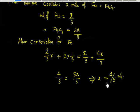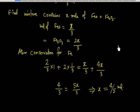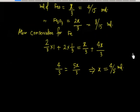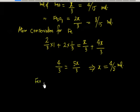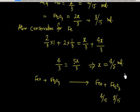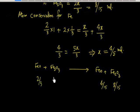So x = 4/5 mole is the total final moles. The mole of FeO is x/3 = (4/5)/3 = 4/15 mole. The mole of Fe2O3 is 2x/3 = 8/15 mole. Note that 8/15 + 4/15 = 12/15, which is not equal to 1 — as expected. Initially we had FeO = 2/3 mole and Fe2O3 = 1/3 mole.